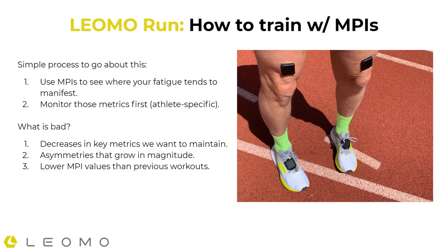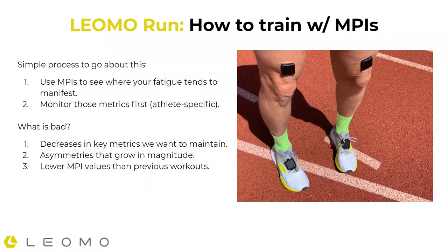What is the process we're going to go through? We have those four criteria, and I'm going to suggest a very simple method. The first thing is to use the MPIs to see where your fatigue tends to manifest — since it looks different for each individual, we need to understand on an individual level where things tend to go first. Those become our priority metrics, which makes this automatically athlete-specific. Things to watch for: decreases in key metrics, asymmetries that increase in magnitude, and lower MPI values than previous workouts.